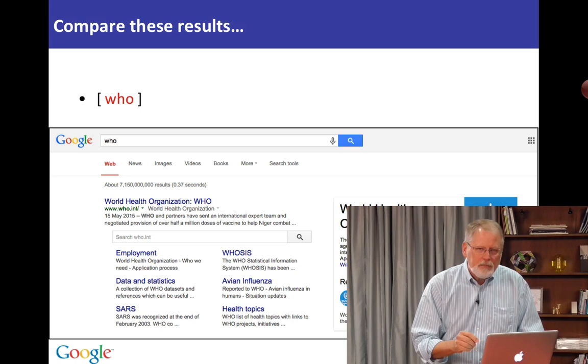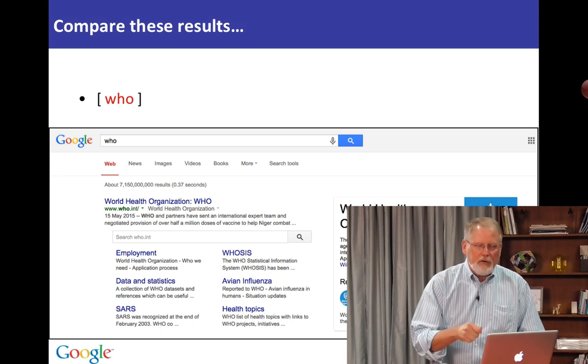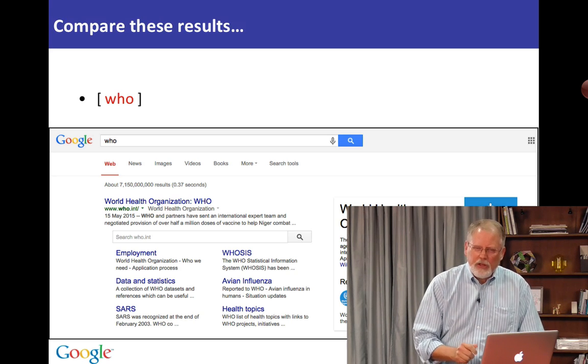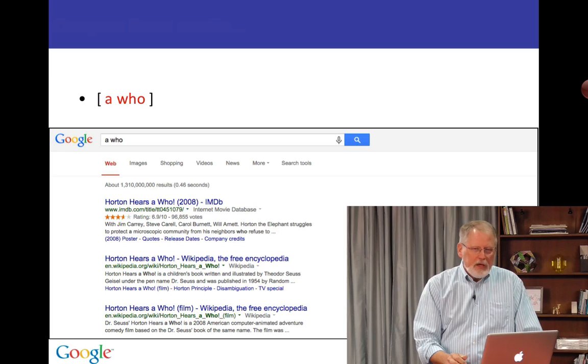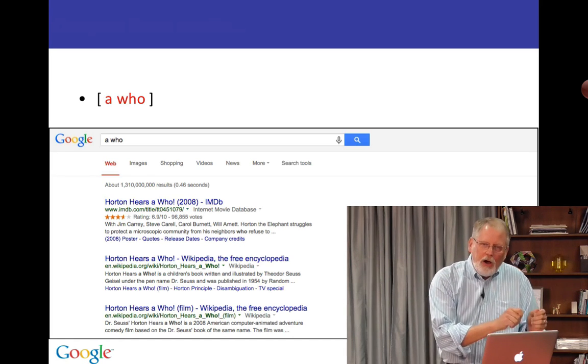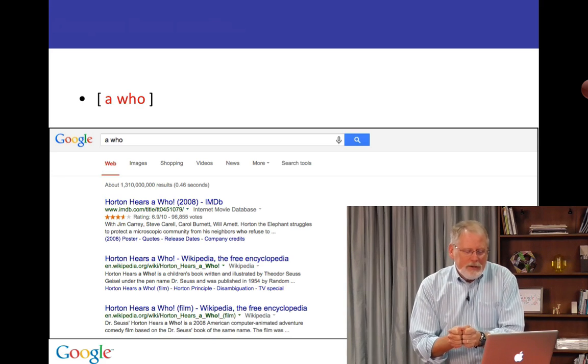But now let's think about this. In English, if we just add the article 'a' in front of that word, it changes the meaning a lot. So let's try that. What does that search look like? Here, I've done the query 'a who', or the article 'a' in front of the word 'who'. See how it changes it?